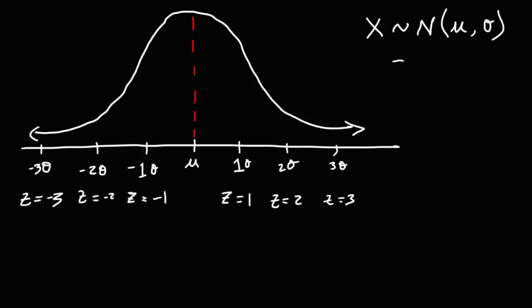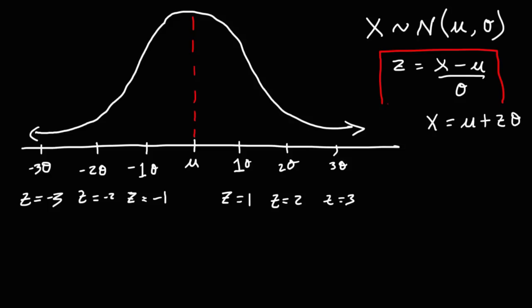The formula to calculate the z-score is: z equals x minus the mean divided by the standard deviation. Sometimes you may need to calculate x: x equals the mean plus z times the standard deviation. Make sure you write down these formulas for the problems coming up later.